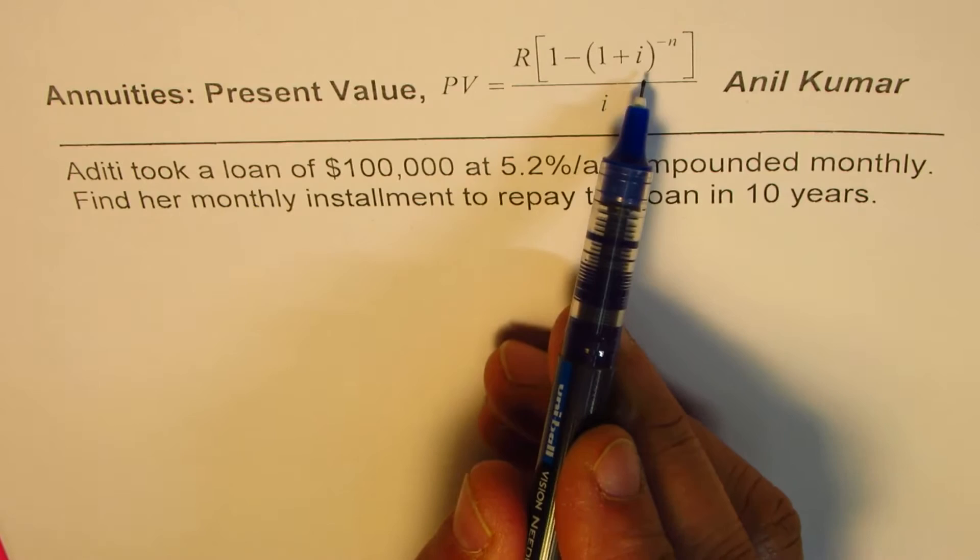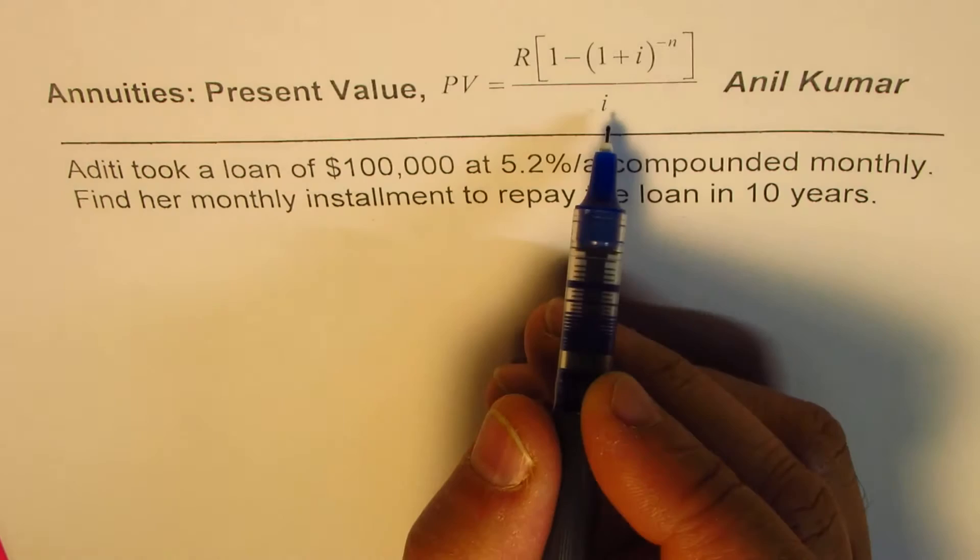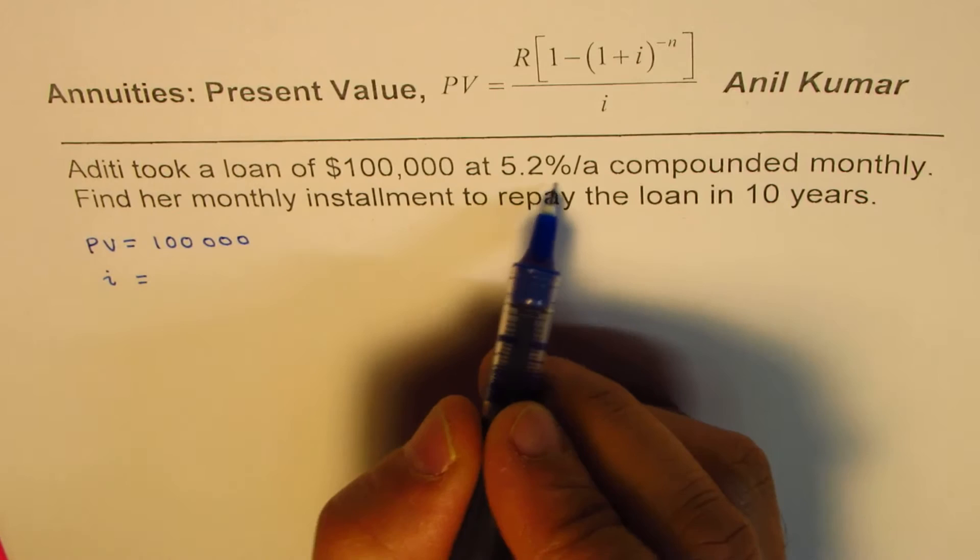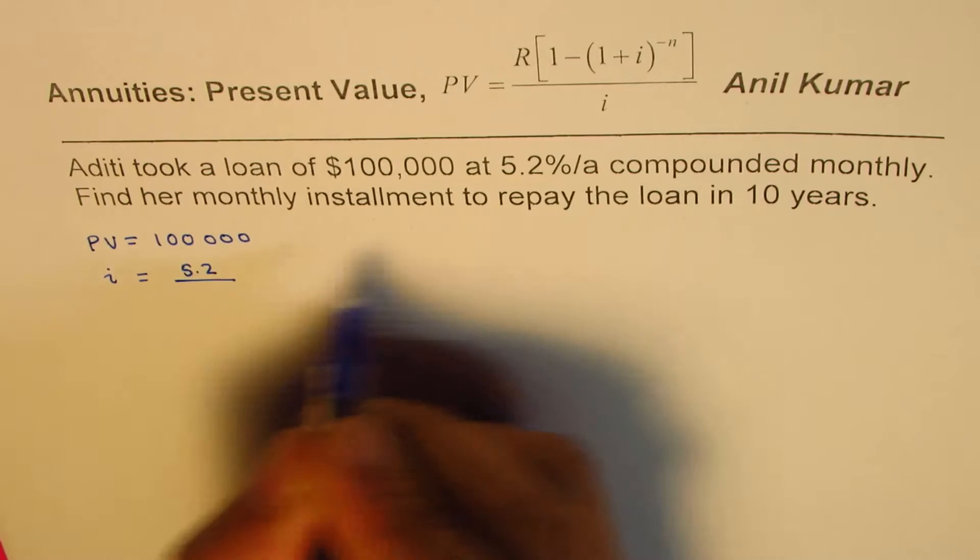Let's figure out what i is for us. We know the present value is $100,000. i should be, since the rate of interest is 5.2%, it will be 5.2 divided by 100 to convert to decimals, and then monthly means divided by 12, so 1200.